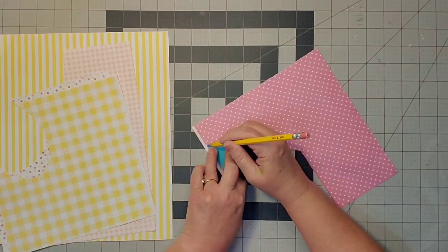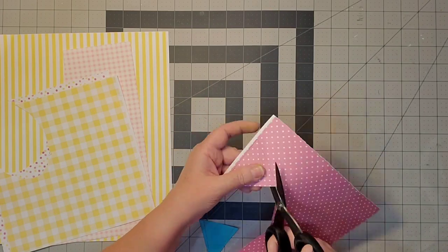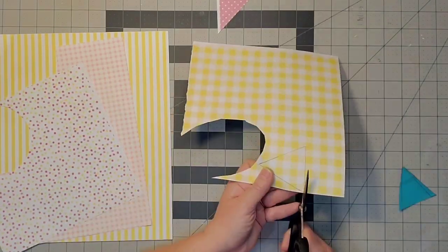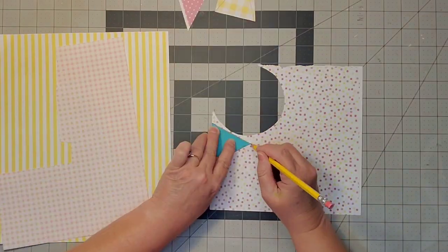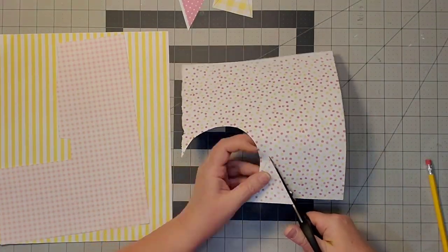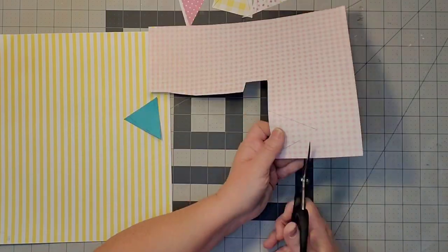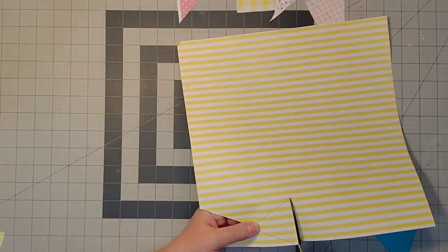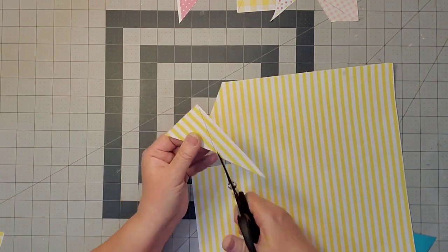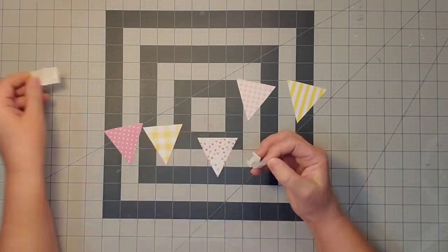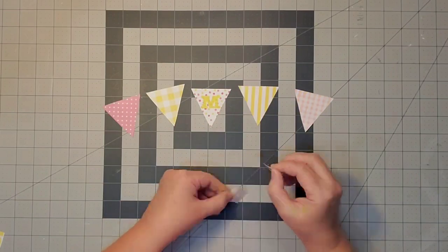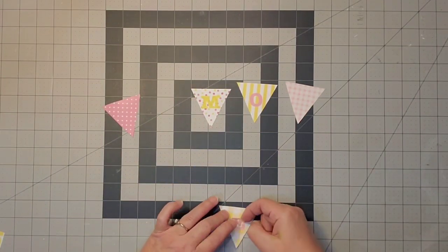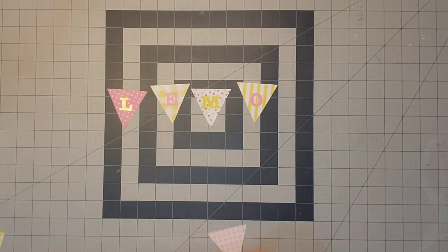Next I'm tracing my pennants on all my scrapbook paper. You have to plan ahead so that you put a yellow letter on a pink background and vice versa for a nice mix of color. I'll cut those out, being careful on the striped paper so my point falls in the middle of a stripe. Then I'll peel off my letters and stick them on.